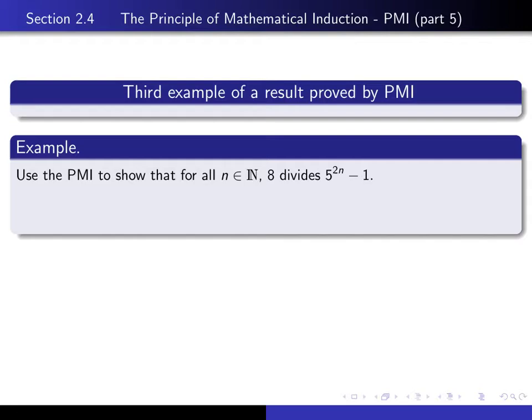Here's the one we're going to prove. We're going to prove that for every natural number n, 8 divides 5 to the 2n minus 1.